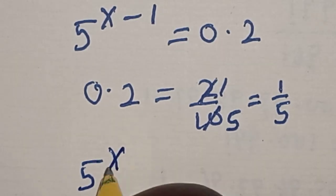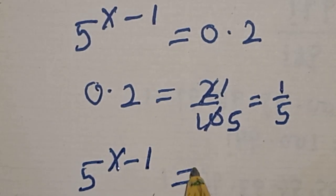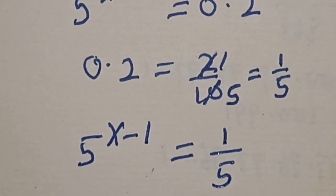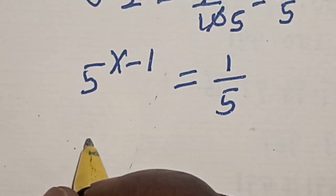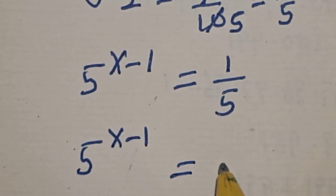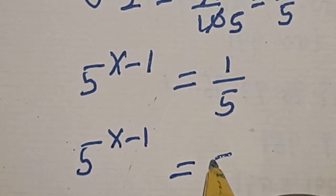Now 5 raised to power x minus 1 is equal to 1 over 5. 5 raised to power x minus 1 equals 1 over 5, which is the same thing as 5 raised to power minus 1.